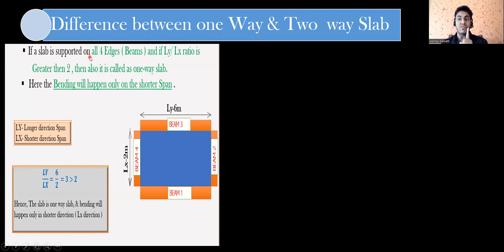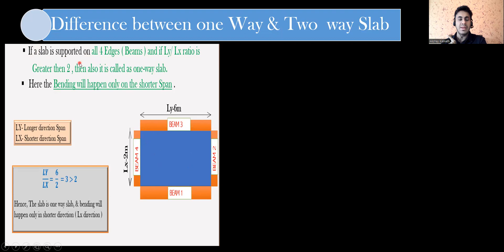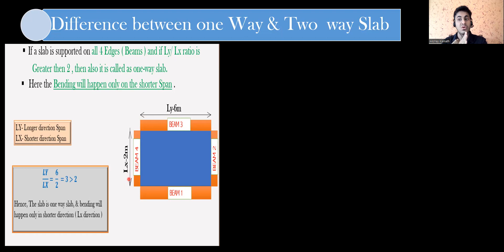Let's start with the one-way slab. First definition: a one-way slab bends in only one direction; a two-way slab bends in both directions. Now, a second definition: if a slab is supported on all four edges — say the blue color is the slab, with beam 1, beam 2, beam 3, and beam 4 — and if the ly/lx ratio is greater than 2, then it is called a one-way slab. Here, ly is the longer direction span and lx is the shorter direction span. If the ratio of longer to shorter span is greater than 2, it is a one-way slab, and bending will happen only on the shorter span.